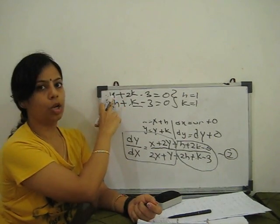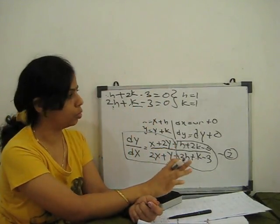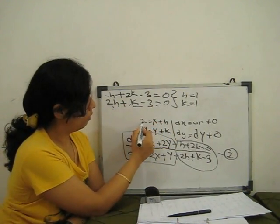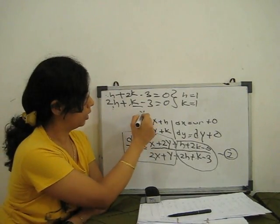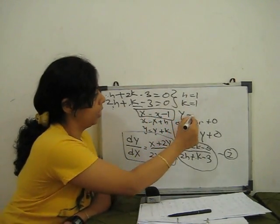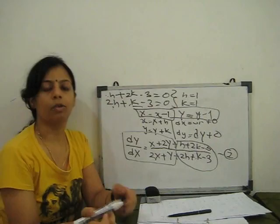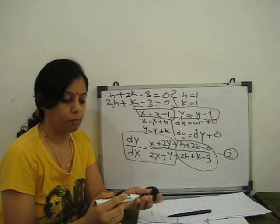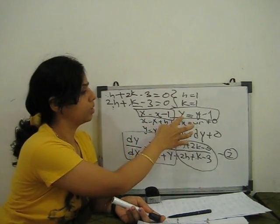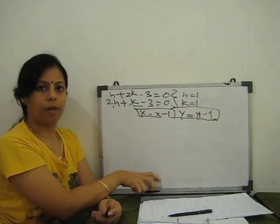Check: if h = 1 and k = 1, then 1 + 2 − 3 = 0 and 2 + 1 − 3 = 0. So these are our values. Hence capital X = x − h = x − 1 and capital Y = y − k = y − 1. We must remember this substitution because at the end we replace X with x − 1 and Y with y − 1 to get the final solution.